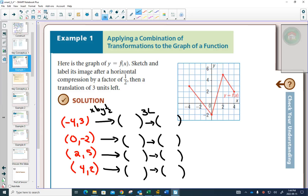So I take my points, x values by a half. Negative 2, 0, 1, 2, y values wouldn't change. Then 3 to the left, negative 5, 3, negative 3, negative 2, negative 2, 5, and negative 1, comma 2. We've got our points.